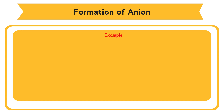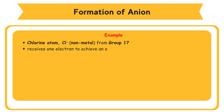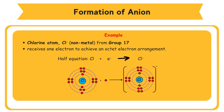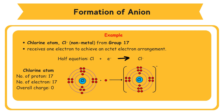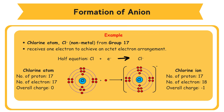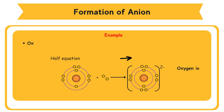Formation of Cl⁻ anion. Chlorine atom, a non-metal from Group 17, receives one electron to achieve an octet electron arrangement. Half equation: Cl + e⁻ → Cl⁻. Chlorine atom: number of protons = 17, number of electrons = 17, overall charge = 0. Chloride ion: number of protons = 17, number of electrons = 18, overall charge = −1.